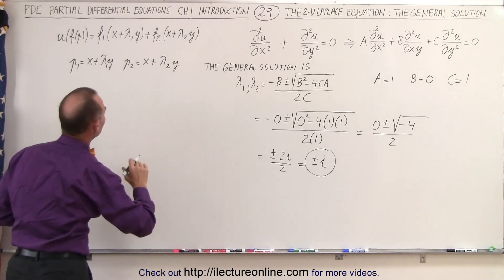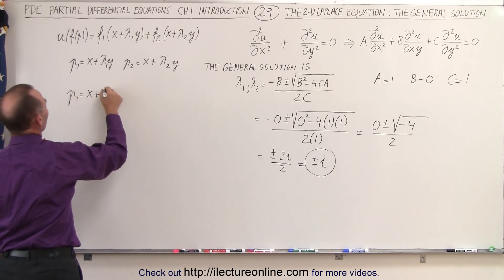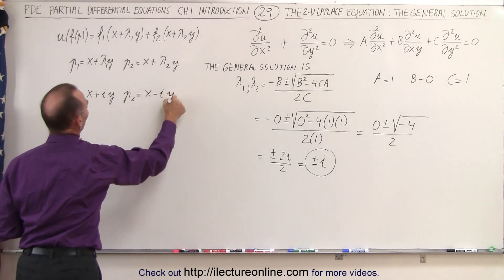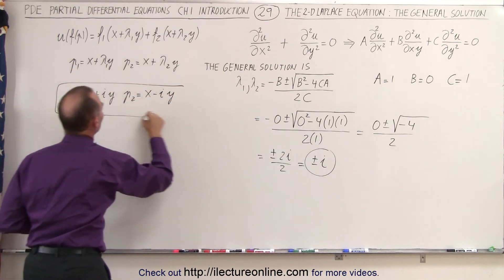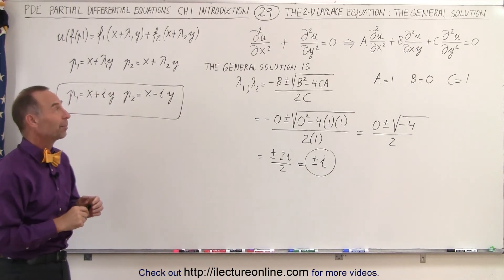And then if we plug in what that is equal to, we have p1 is going to be equal to x plus i y, and p2 is going to be equal to x minus i y, as the two general solutions to the two-dimensional Laplace equation.